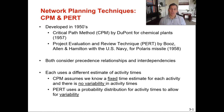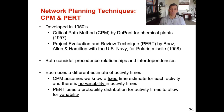There are a lot of similarities between both of these methods and a couple differences as well. The main thing that both of them review and consider is precedence relationships and how those relationships have interdependencies — essentially looking at the steps in each one of these projects and what comes one after the next. The big difference between the two is that CPM assumes we know a fixed time estimate and there is no variability in the activity times. So if we believe a project is going to take 16 weeks, we just assume it's going to take 16 weeks — a fixed time with no variability.